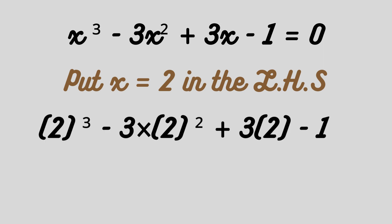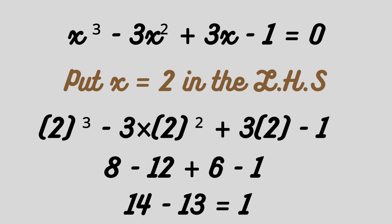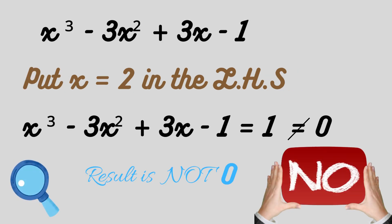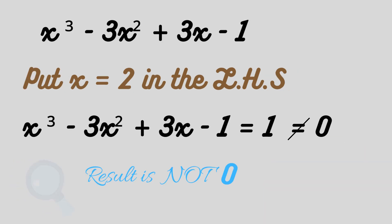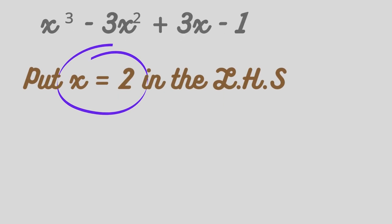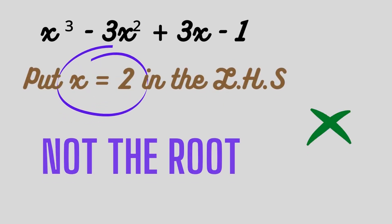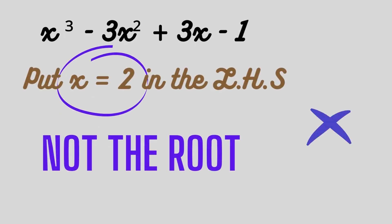For x = 2: 2³ - 3(2²) + 3(2) - 1 = 8 - 12 + 6 - 1 = 14 - 13 = 1. We did not get 0, so x = 2 is not a root of this equation.